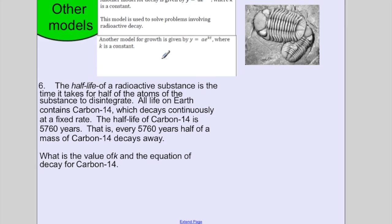Example 6. The half-life of a radioactive substance is the time it takes for half of the atoms of the substance to disintegrate. All life on Earth contains carbon-14, which decays continuously at a fixed rate. Which tells me I'm going to have to use one of these equations. The half-life of carbon-14 is 5,760 years. That is, every 5,760 years, half of the mass of carbon-14 decays away. What is the value of k in the equation of decay for carbon-14?